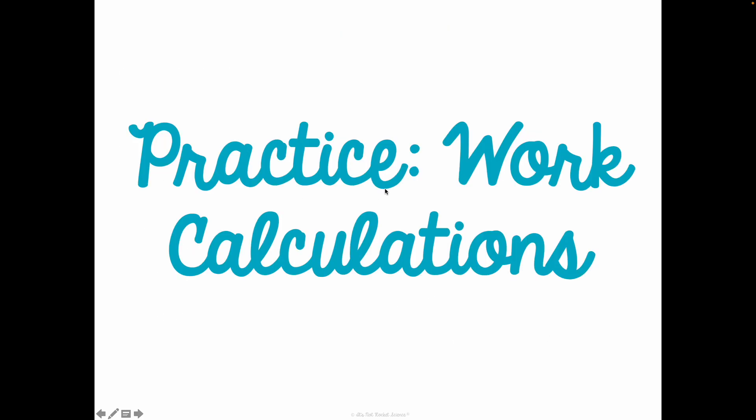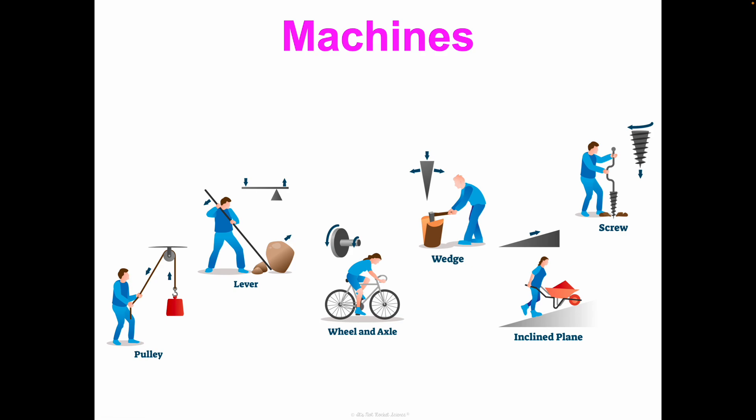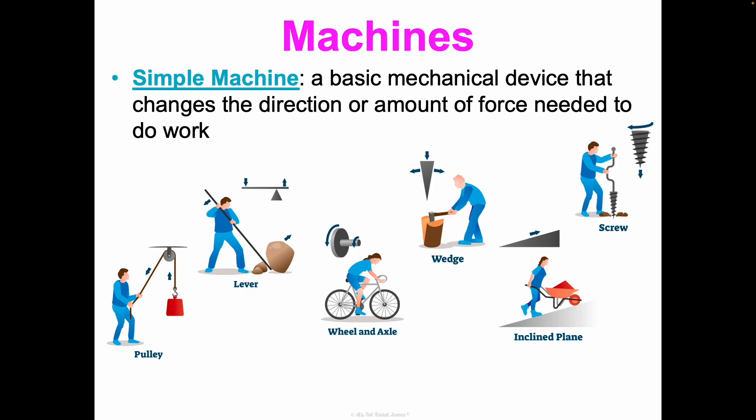In class, we're going to do some work calculations. But I have one more thing I want to introduce you to before I let you go in this video. And that's what machines are. This is something you have probably heard in previous science classes. I'm going to briefly introduce you to here. And then we're going to do an activity where you'll dive into this a lot deeper. But a simple machine, in particular, is a basic mechanical device that changes the direction or the amount of force needed to do work.